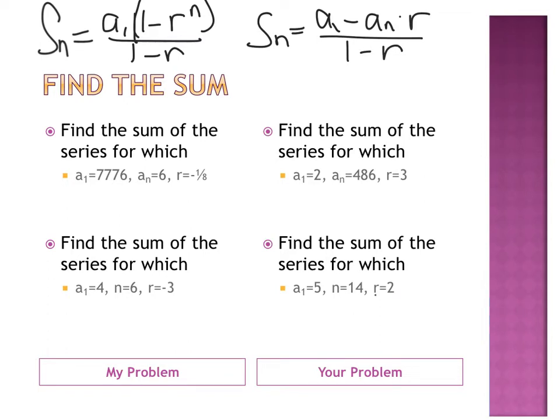The information that's given to me will determine which equation I use. So, in my first example, I'm asked to find the sum of the series for which A1 equals 7,776, An equals 6, and R equals negative 1 eighth. Which formula am I going to use? The second one. Why? Because I know A1, I know An, and I know R, so that's my second equation.